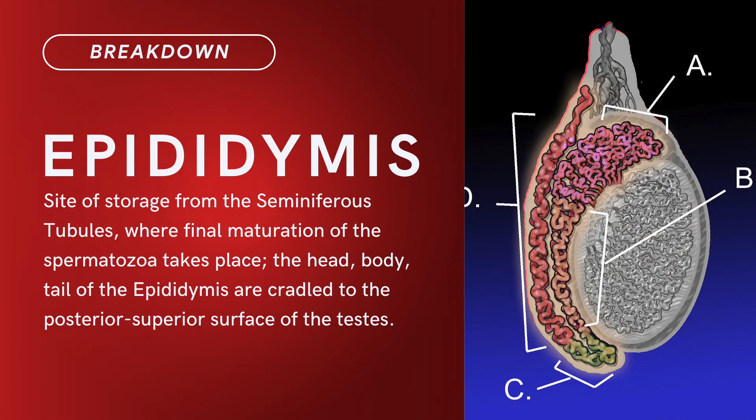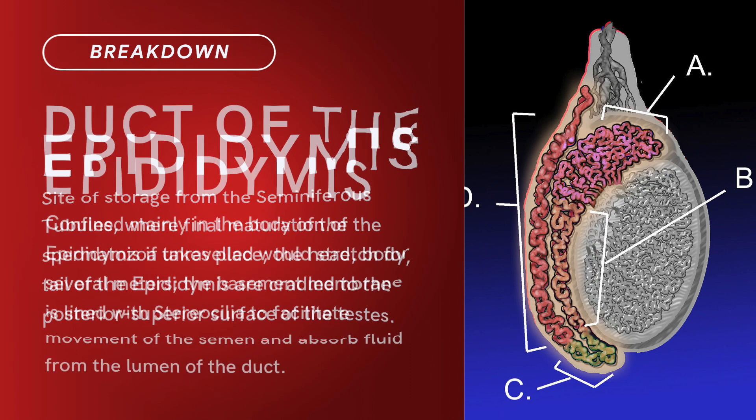Compound term: epididymis. Brief definition: site of storage from the seminiferous tubules where final maturation of the spermatozoa takes place. The head, body, and tail of the epididymis are cradled to the posterior superior surface of the testes.